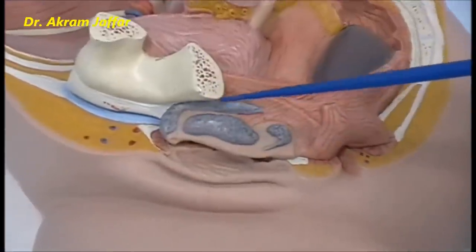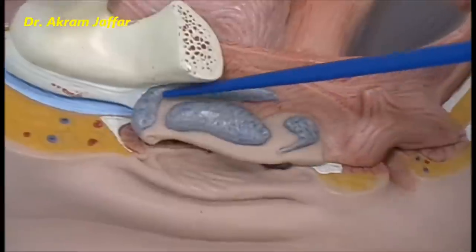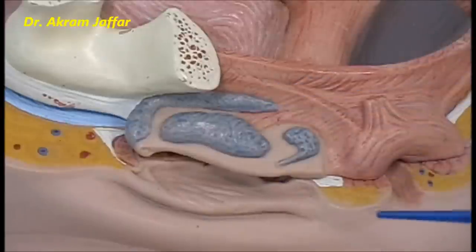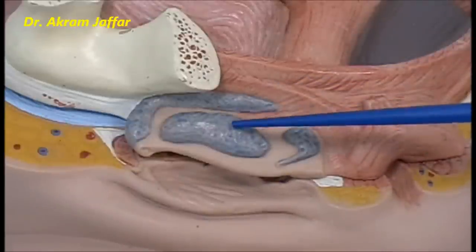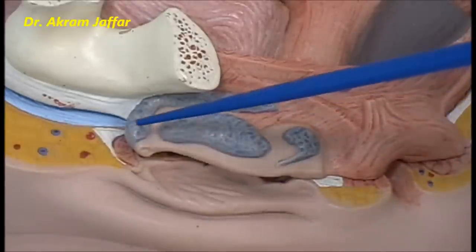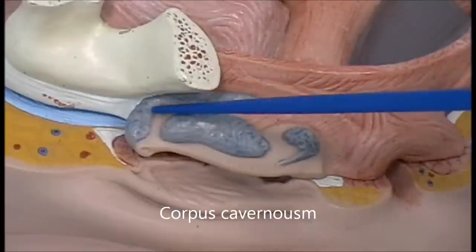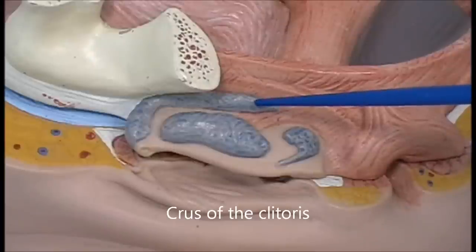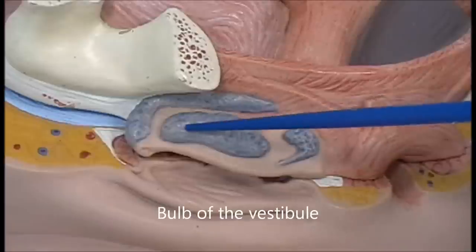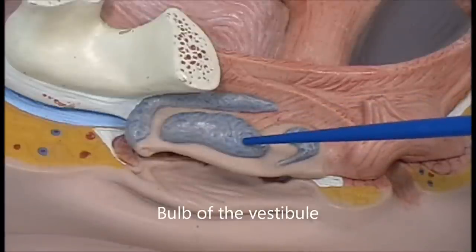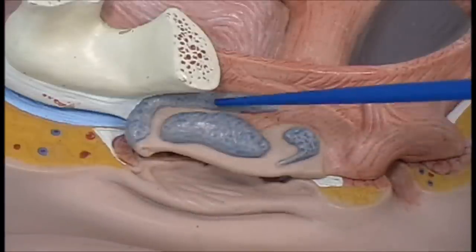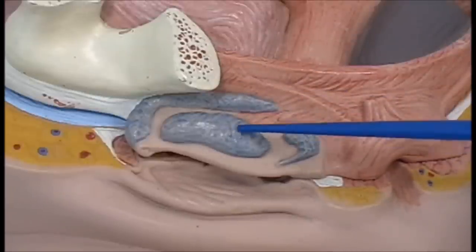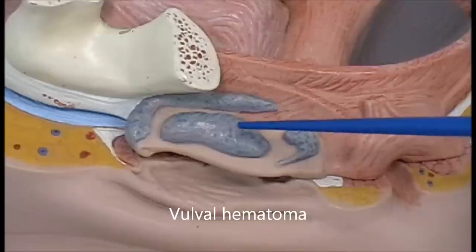Inside, the clitoris is made of cavernous — erectile — tissue: corpus cavernosum. Its extension backwards, located in the superficial perineal pouch, is the crus of the clitoris. This is the bulb of the vestibule. This cavernous tissue contains a lot of blood, and injury here might lead to bleeding within the labia majora.